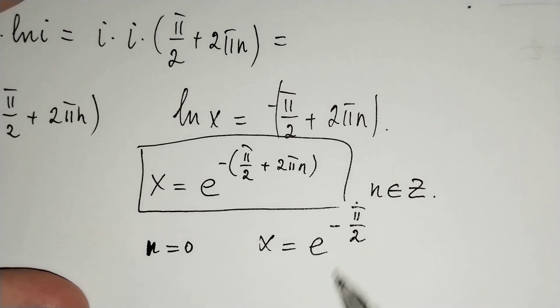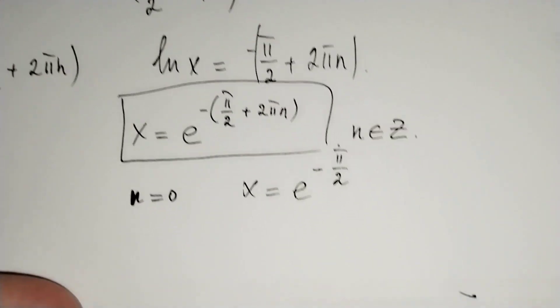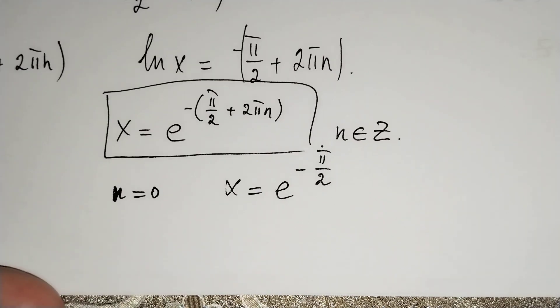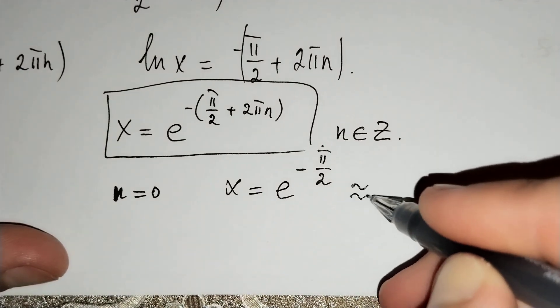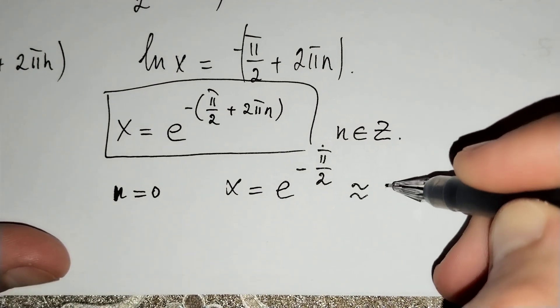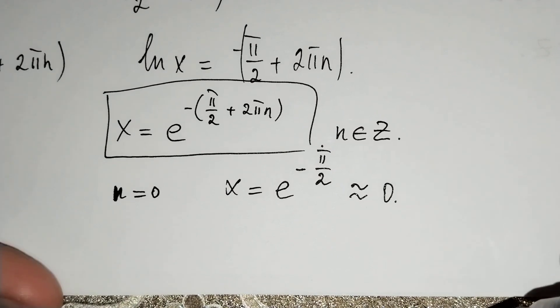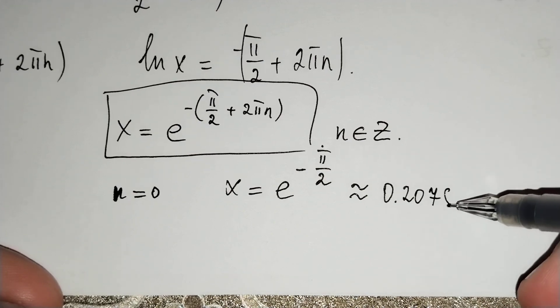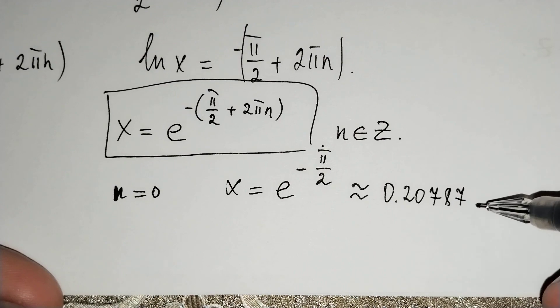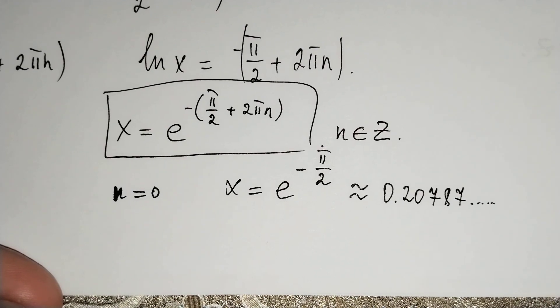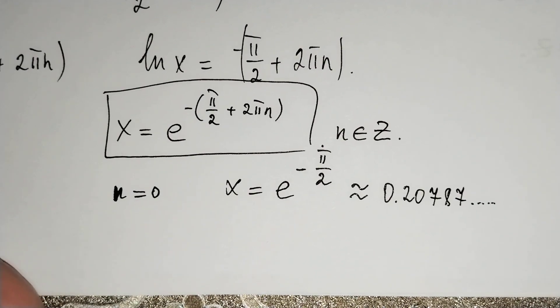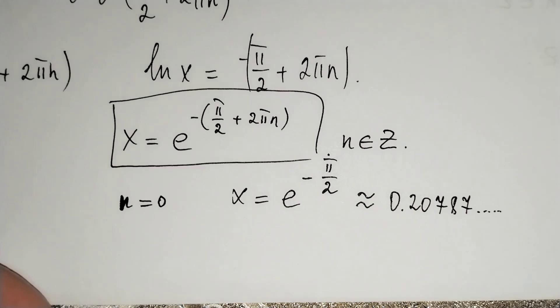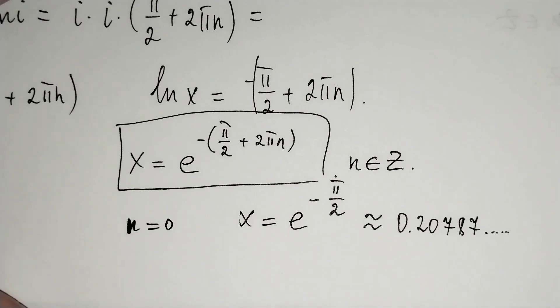If n equals 0, x equals e power minus pi over 2. If we calculate this, it's approximately 0.20787. Thanks for watching, don't forget to subscribe to my channel and thumbs up my video.